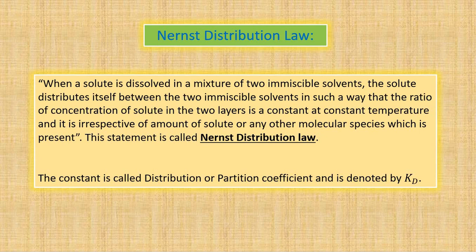The same statement is given here: when a solute is dissolved in a mixture of two immiscible solvents, the solute distributes itself in the two immiscible solvents in such a way that the concentration of solute in both the layers is a constant at constant temperature, irrespective of the amount of solute or any other molecular species present. That constant is called the distribution or partition coefficient and it is denoted by KD.